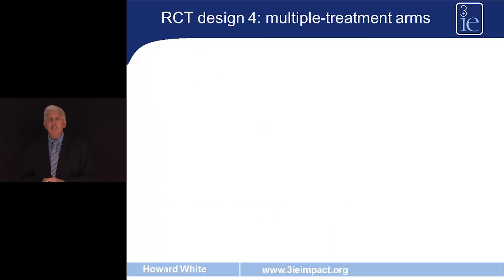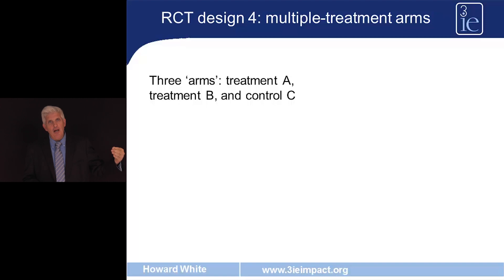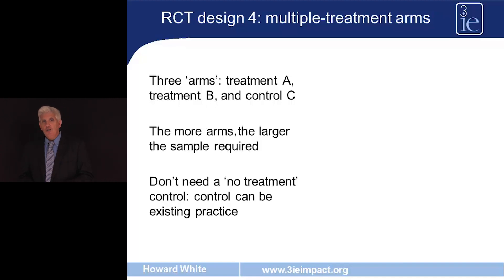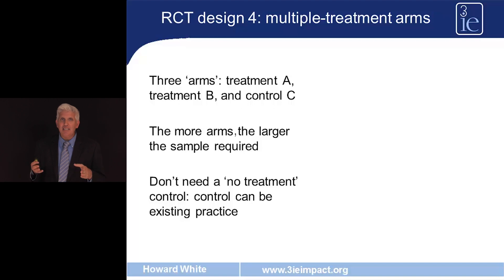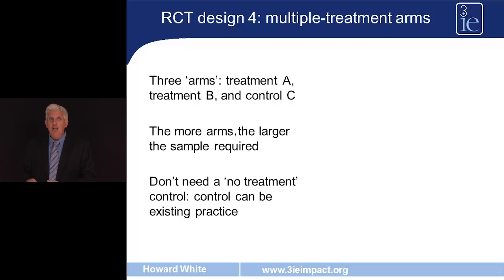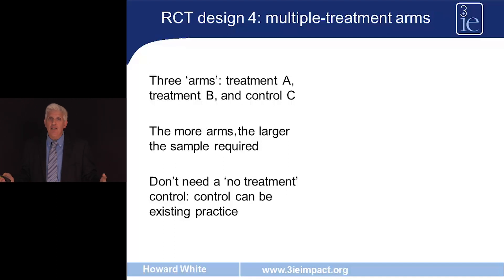The fourth possible design is to have multiple treatment arms. We don't need just a treatment arm and a control arm — we might have treatment arm A, treatment arm B with a different treatment, and a no-treatment control arm. More arms require a larger sample size. We also don't have to have a no-treatment control arm; often the control arm gets the existing practice — as in the Gujarat industrial pollution study, where the control arm was subject to the existing regulatory mechanism. This is common in medical RCTs, where the control gets the existing standard of care, so we examine how a new intervention compares to existing policy.